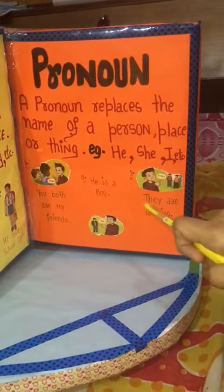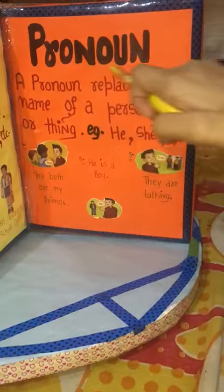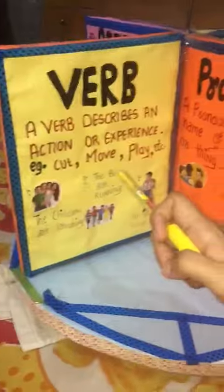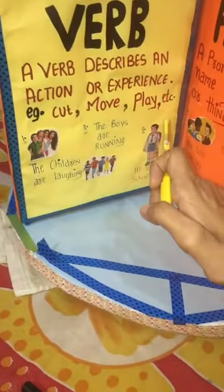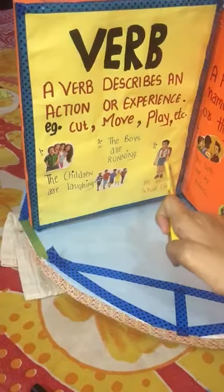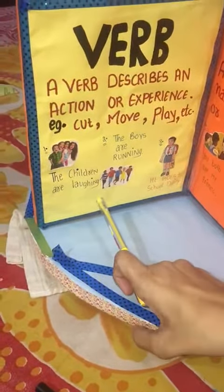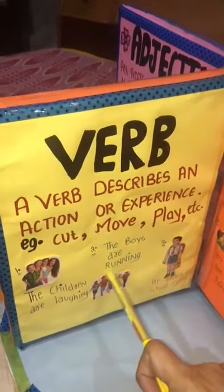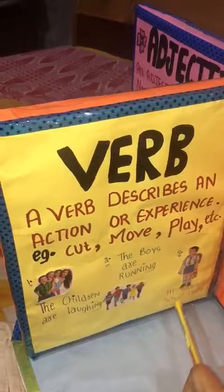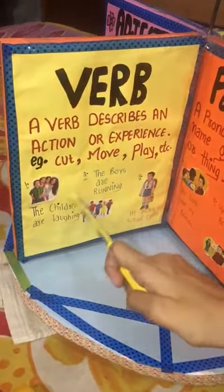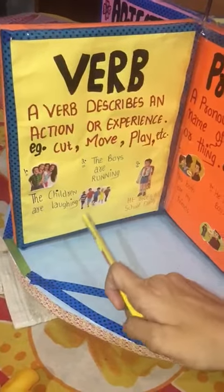The next is verb. A verb describes an action or experience. For example, students, you can see in all these pictures the persons are doing some actions. For example, the children are laughing, the boys are running, he goes to school daily. These words laughing, running, goes are action words. So they are verbs.